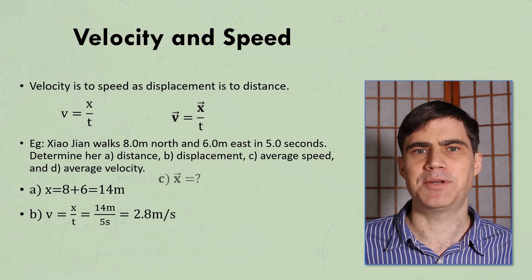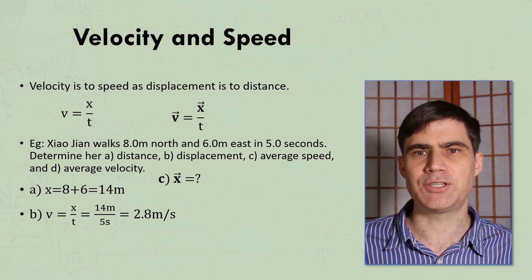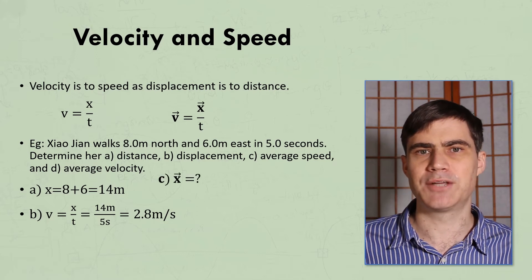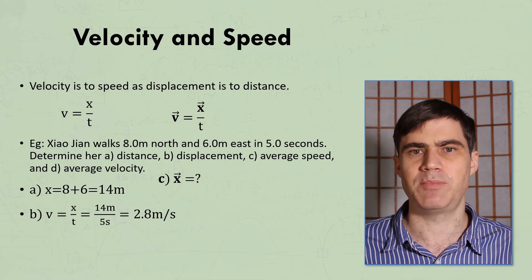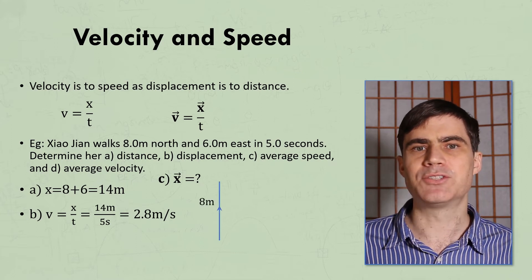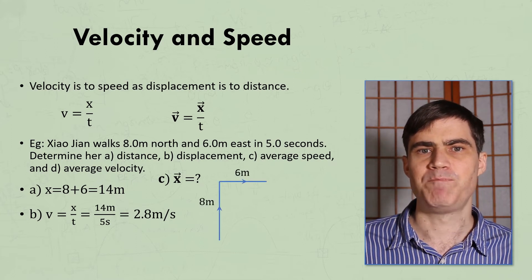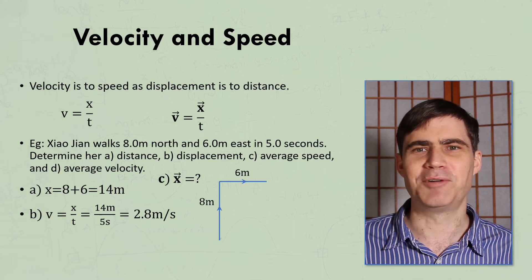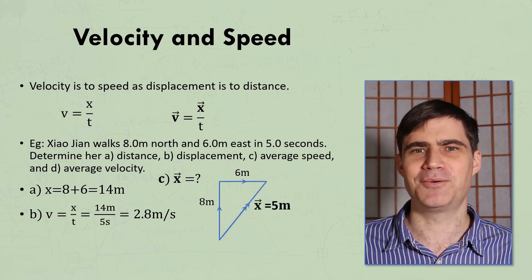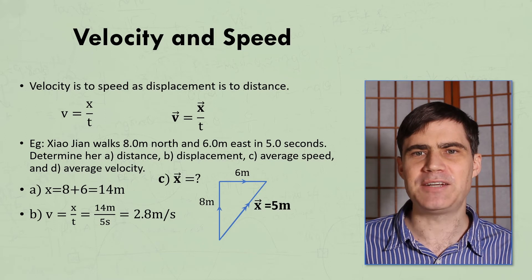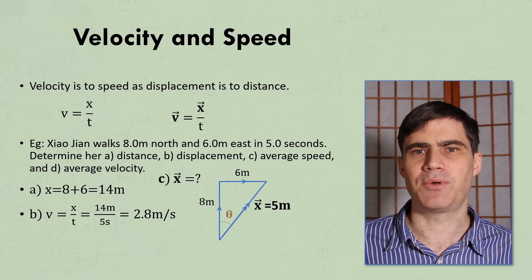But for her displacement, we need to take into account her direction and figure out where she ends up relative to where she starts, which we'll choose to be the origin. She walks 8 m north and then 6 m east. Any self-respecting physics student would recognize this as a 3-4-5 triangle. But because displacement is a vector, we're going to need to give our answer with an angle.